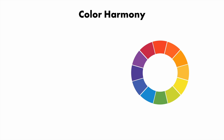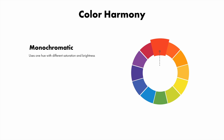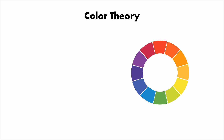Monochromatic color schemes use one hue with different saturations and brightnesses. To create a monochromatic color scheme or palette, choose a single color or hue from the color wheel and change its saturation or brightness for each of the other swatches. Analogous color schemes use colors that are next to each other on the color wheel.